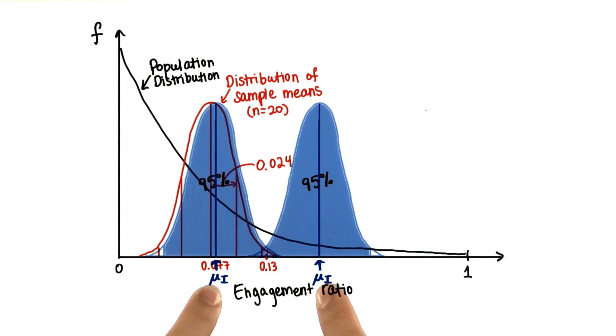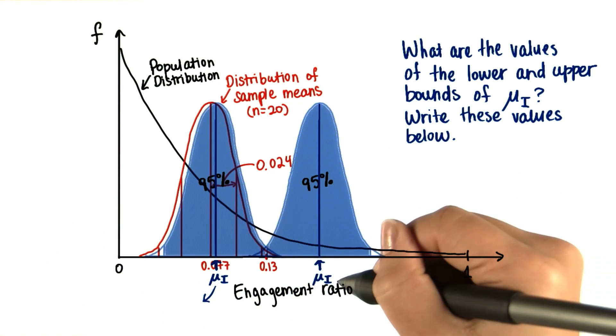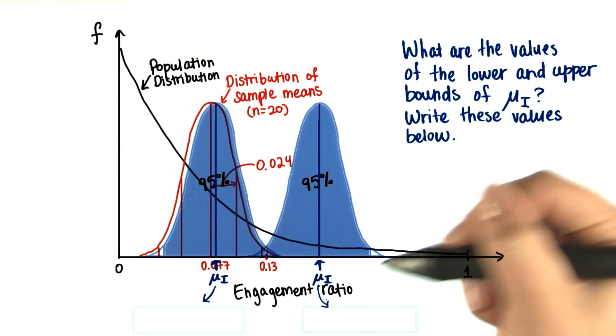What are these values? So this value here should be what? And this value here should be what?